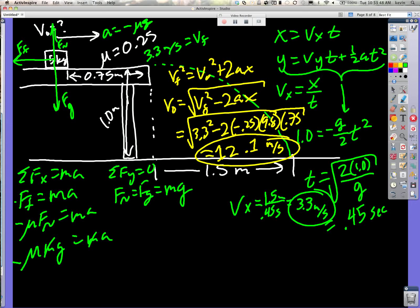First of all, the problem had this block sliding off and landing here. And if you know all these distances and mu, how do you find the initial velocity?